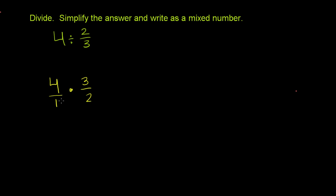And now this becomes kind of a plain vanilla multiplying fractions problem. So we could just multiply it out. We could just say that this is 4 times 3, which would be 12, 12 over 1 times 2, which would be 2.